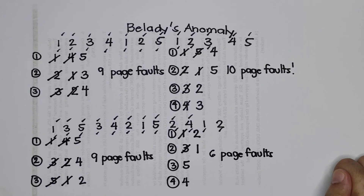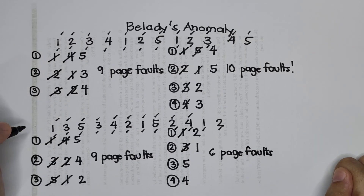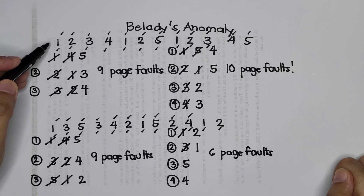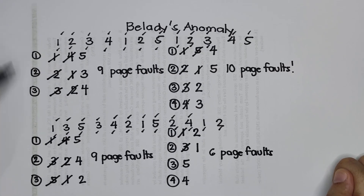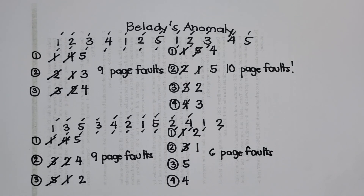We can now conclude that Belady's Anomaly only occurs depending upon the sequence of the values of the reference string. I've already made another sequence made out of the same values — the only difference between the two is the sequence. I hope that you understand all about Belady's Anomaly. If you have further questions, please feel free to comment below, and please don't forget to subscribe to my YouTube channel. Thank you very much and good day.